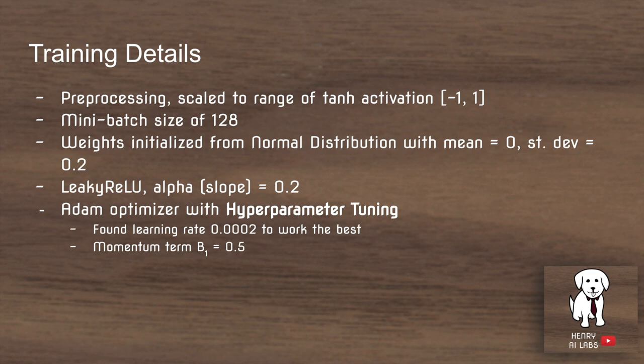They initialize their weights with a normal distribution with zero mean and standard deviation of 0.2. The leaky ReLU slope parameter is also set to 0.2. Another interesting aspect of deep learning is hyperparameter tuning on surface-level parameters like the learning rate and the momentum term used with the Adam optimizer.